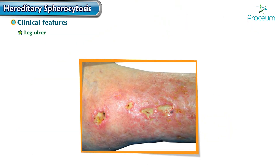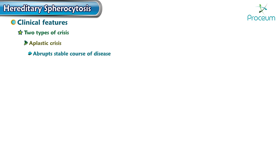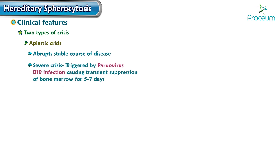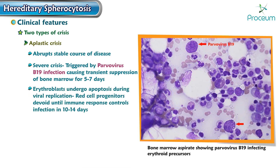Leg ulcers are a rare manifestation of hereditary spherocytosis. There are two types of crisis: aplastic crisis and hemolytic crisis. Aplastic crisis disrupts the stable course of the disease. The most severe crisis is triggered by parvovirus B19 infection, causing transient suppression of the bone marrow for 5 to 7 days.